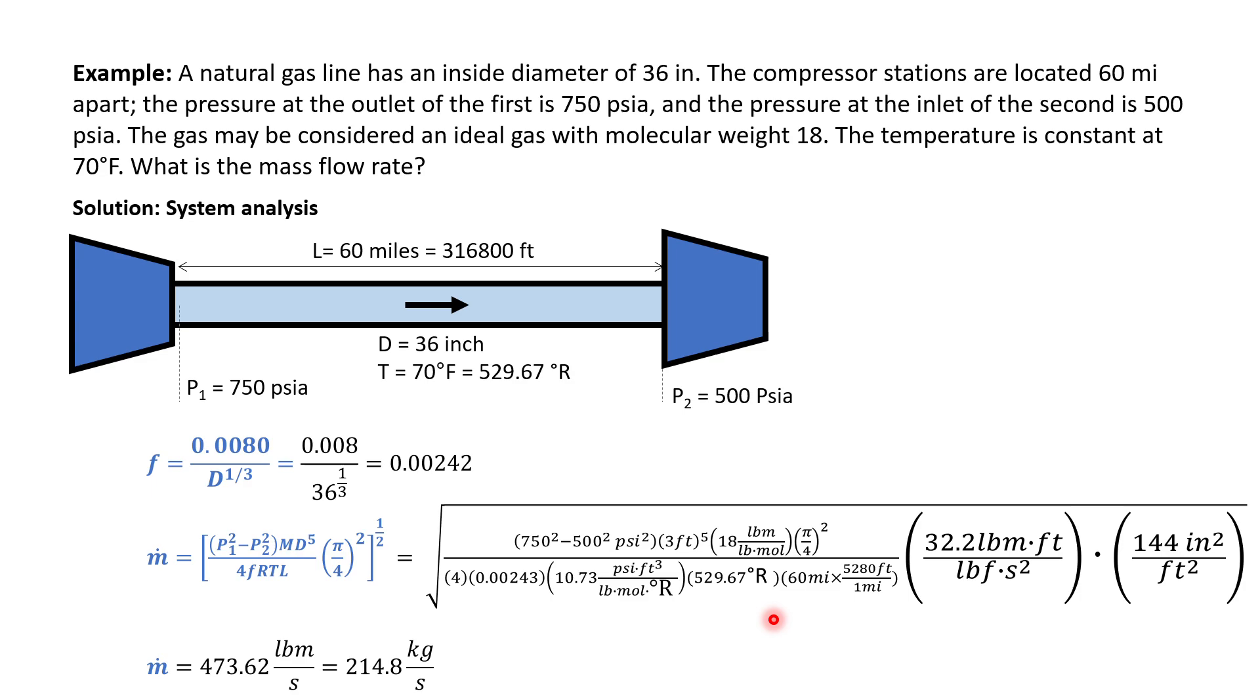So the problem here is identical to the one before. So you are given the length, you are given the pressure in the beginning, you are given the pressure in the end. So it's up to you if you are convenient with non-SI unit system. You can straightaway apply to the equation given. So you key in appropriately with the appropriate conversion. You will end up with a mass flow rate of 214.8 kg per second.